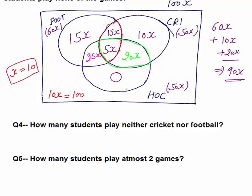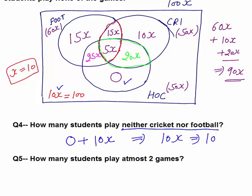Question 4: How many students play neither cricket nor football? We need values outside both the cricket and football circles. Looking at the diagram, only 0 (hockey-only) and 10x (none region) fall outside both circles. So the answer is 10x = 100 students.